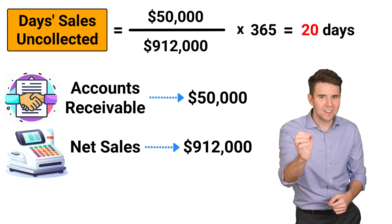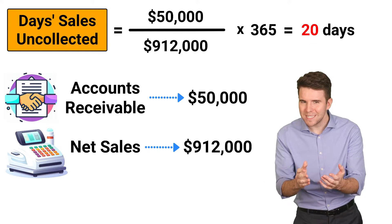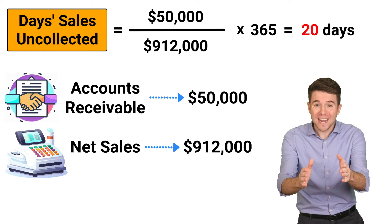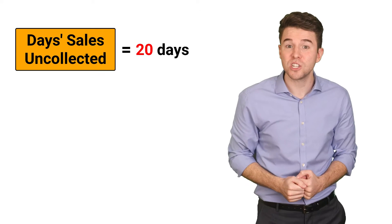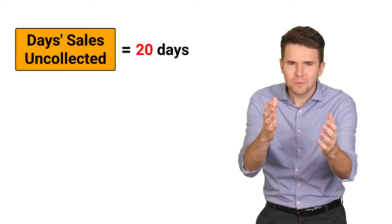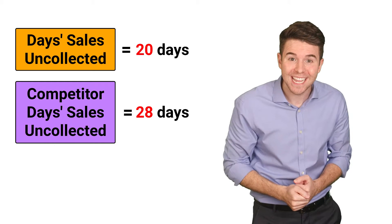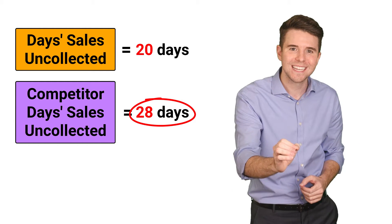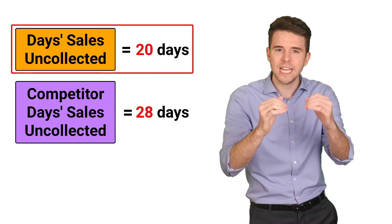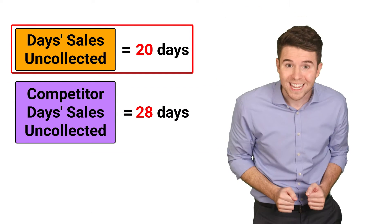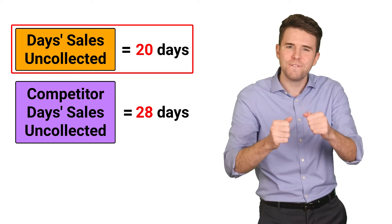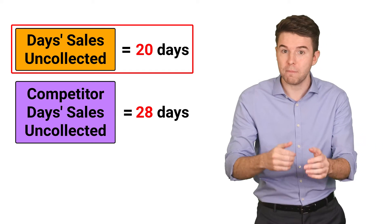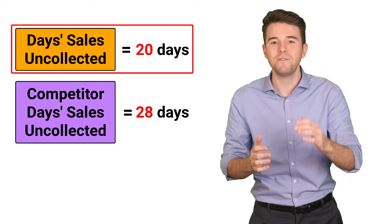But is 20 days good or bad? Well, it depends on the industry, the economy, and other factors. A good way to gauge this is by comparing it to a competitor. For instance, if a competitor has a Days Sales Uncollected ratio of 28 days, then the company with the lower ratio of 20 days is collecting cash faster. A company prefers to collect cash faster as they can use it to pay bills or reinvest in the company.